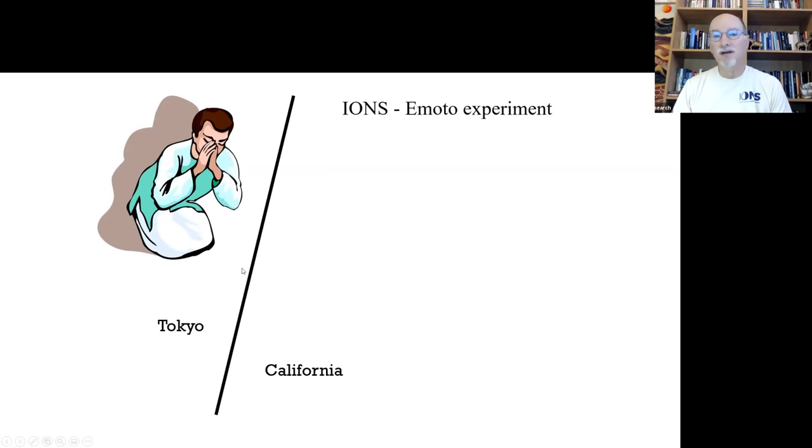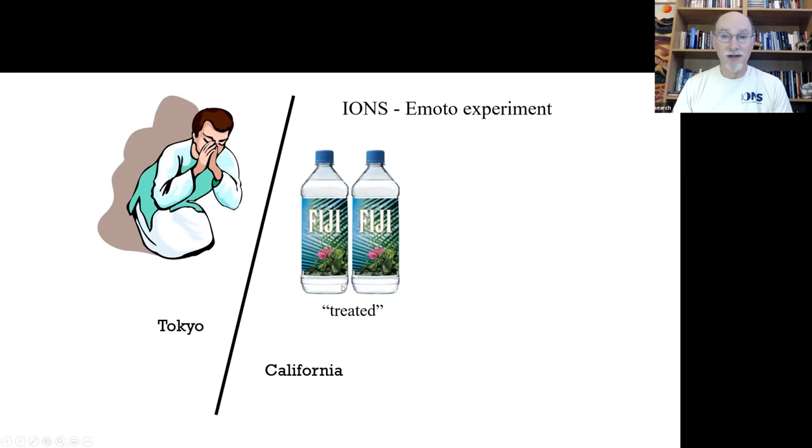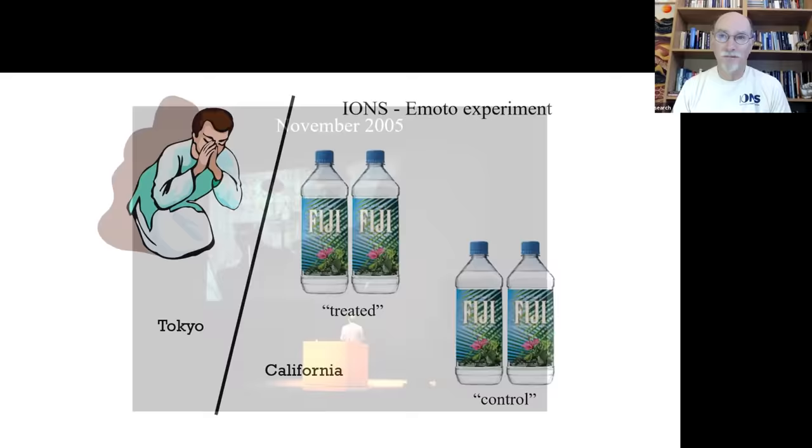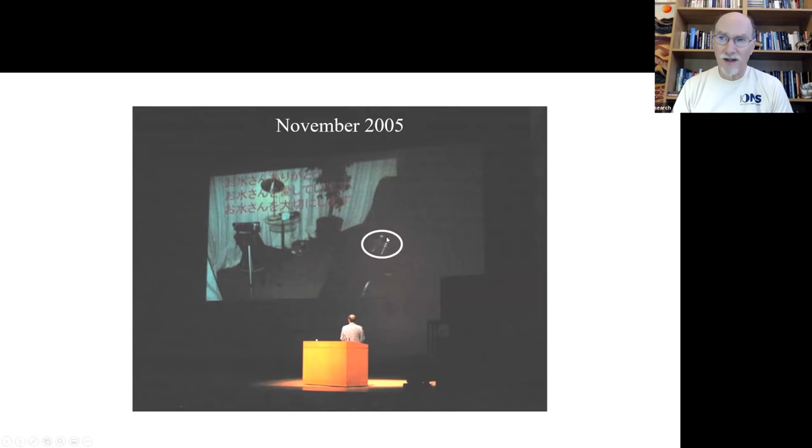So we did an experiment. So Dr. Emoto and a group of people in Tokyo sent their beautiful thoughts to our laboratory in California to two bottles of Fiji brand commercial water, which they then attempted to treat. We also set aside two additional bottles, which we didn't tell them about, which we'd use as controls. So here's a picture of Dr. Emoto in front of the audience, up on the screen there. These are the two bottles that they were asked to send their thoughts to. And up here is a prayer of gratitude for the water.